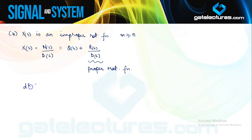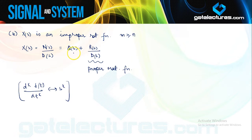Using this property, the inverse Laplace of the quotient Q(S) can be found out easily. Since R by D is a proper rational function, this can be computed by again expanding into partial fractions. So if we are having an improper rational function, this is how we perform the inverse Laplace. In case of proper rational functions, we have also seen how we perform inverse Laplace.